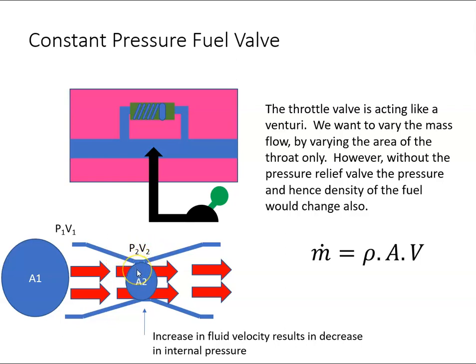We do that by putting a pressure relief valve across this throttle valve. By putting a pressure relief valve across it, the pressure here will be the same as the pressure here, and therefore the flow will only be dependent upon the area.